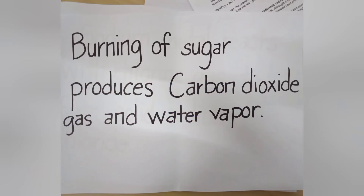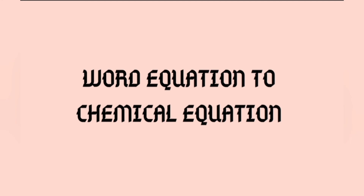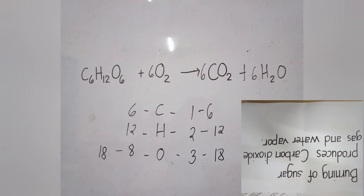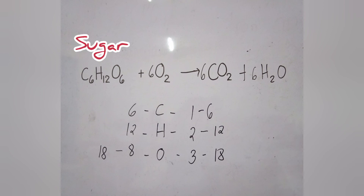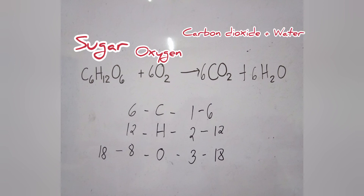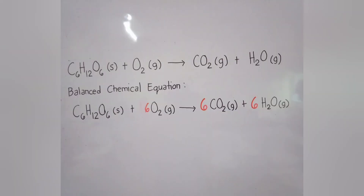Now I want you to try to answer this: transform this word equation into a balanced chemical equation. The reaction is: burning of sugar produces carbon dioxide gas and water vapor. Because of the word 'burning,' we know this reaction is a combustion reaction. Based on combustion reaction, there is always a fuel that reacts with oxygen gas and the product is always carbon dioxide and water. That is why we have glucose or sugar as C6H12O6, O2 as oxygen, CO2 as carbon dioxide, and H2O as water. The balanced chemical equation is C6H12O6 plus 6O2 to form 6CO2 plus 6H2O.